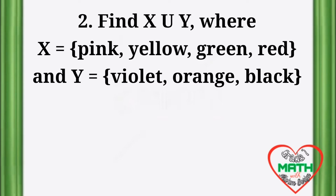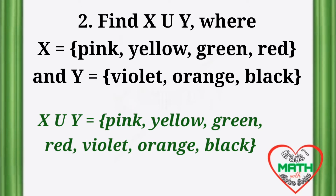Find X union Y where X is equal to {pink, yellow, green, red} and Y is equal to {violet, orange, black}. X union Y is equal to {pink, yellow, green, red, violet, orange, black}. Notice that the elements in X union Y are the combined elements of set X and Y.